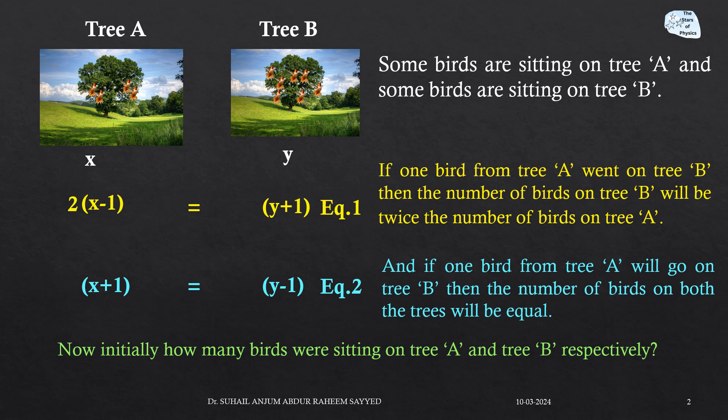If one bird from tree B goes to tree A, then the number of birds on both trees will be equal. That means tree B becomes y minus 1 and tree A becomes x plus 1. So x plus 1 equals y minus 1. This is our equation number 2.